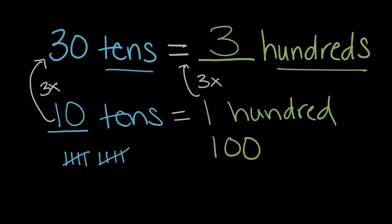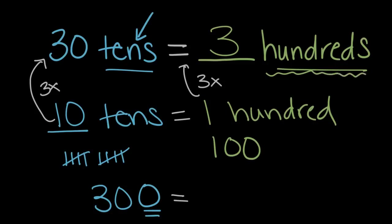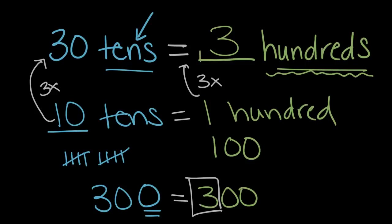We could also think about this in terms of place value. We know that tens can be represented by a zero, so instead of thirty tens we could simply write thirty with a zero on the end — that zero is for tens. Over here, equal to, we have hundreds, and hundreds can be represented by two zeros. So to make these equivalent, what number do we need to fill in? The answer is three, like we already saw. So thirty tens is equal to three hundreds.